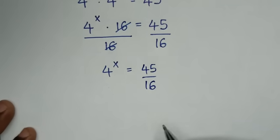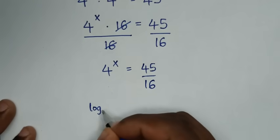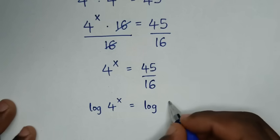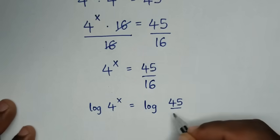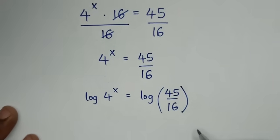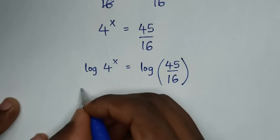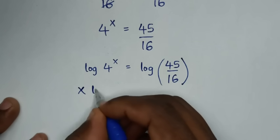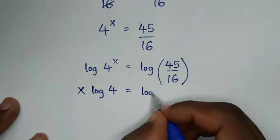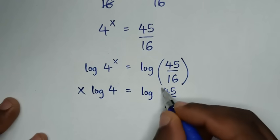Then in the next step, we will apply log on both sides. So it will be log of 4 power of x is equal to log of 45 over 16. Then this power of x will move to the base, so it will be x log of 4 is equal to log of 45 over 16.